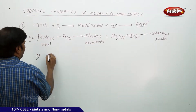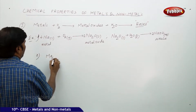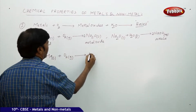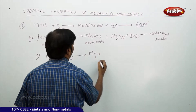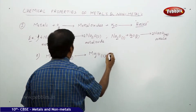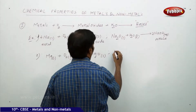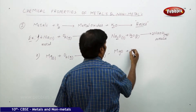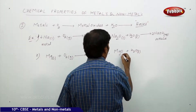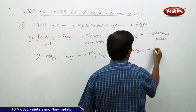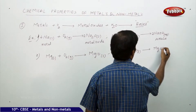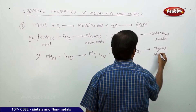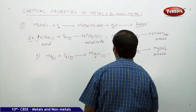Second example: magnesium is a solid. When it is treated with oxygen gas it forms magnesium oxide, which is a metal oxide solid. Take this magnesium oxide — when treated with water it forms magnesium hydroxide, again it is an alkali, it is a base.